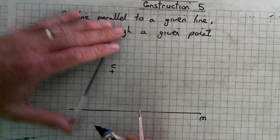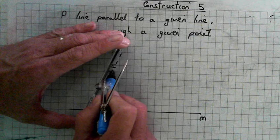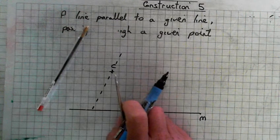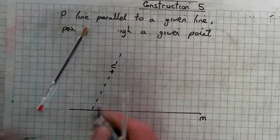Right, so we're going to draw a line through point C first of all. Number two: we're going to place the compass on point D. So we'll call this point D here.